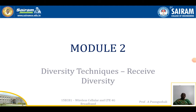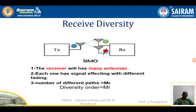We will be seeing about the diversity techniques. The diversity techniques — we will be seeing about receive diversity. Receive diversity is where the transmitter is going to have one antenna and the receiver is going to have multiple antennas. We call it single input multi output, or multi output diversity.